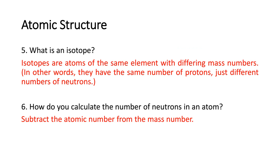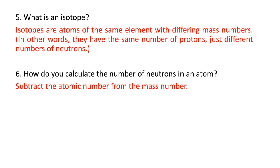Now we're going to look at atomic structure. What is an isotope? Isotopes are atoms of the same element with differing mass numbers. In other words, they have the same number of protons, just different numbers of neutrons. How do you calculate the number of neutrons in an atom? You subtract the atomic number from the mass number — mass number minus atomic number.